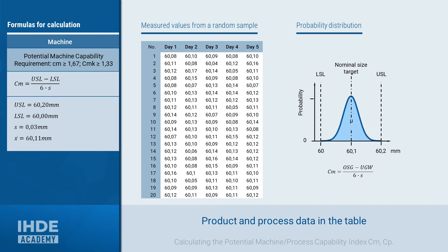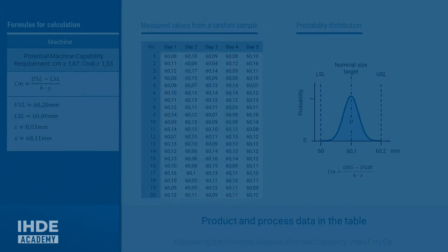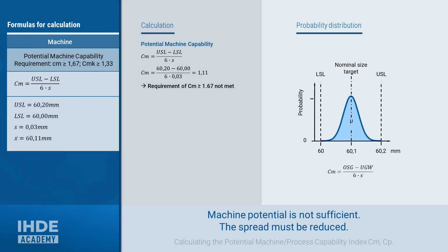The values just calculated for S and X-bar have been transferred to the table on the left. If we insert the corresponding values into the formula for the machine potential, a value of 1.11 is calculated for CM. However, since CM should be greater than or equal to 1.67, the machine does not meet the requirement. If the tolerance has to remain unchanged, the only way to improve the capability is to improve the machine — meaning to reduce the spread.